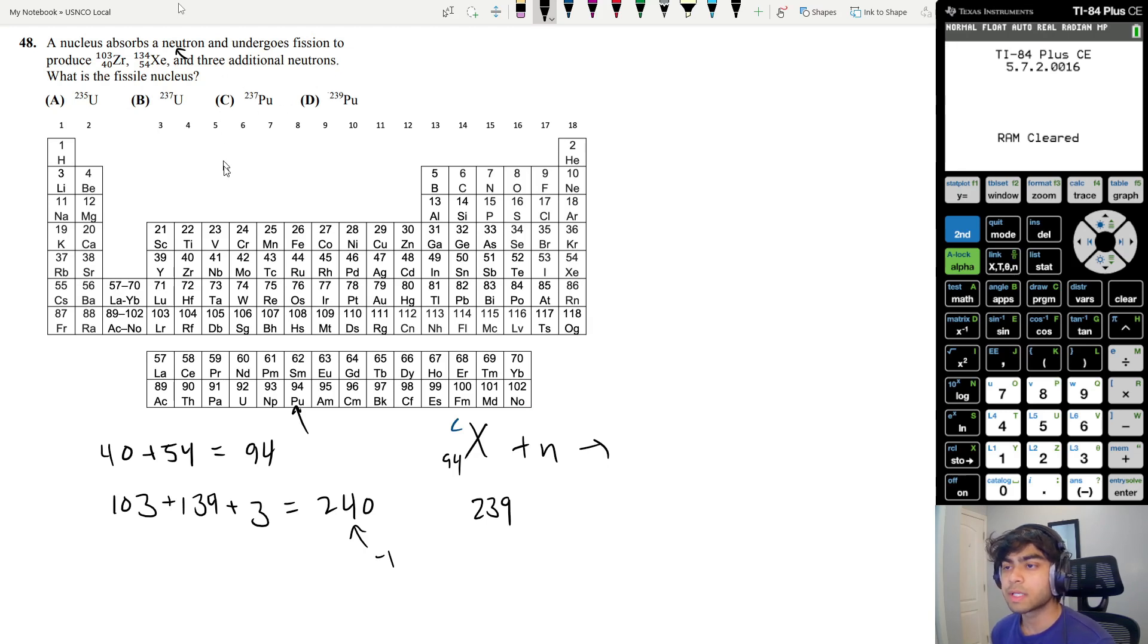The fissile nucleus is going to be plutonium since the atomic number is 94, and it's going to be plutonium 239. So the answer is answer choice D. And that was it for the atomic structure/periodicity section of the USNCO 2024 local exam. I hope this was helpful. I hope you're able to learn something and I'll see you next time. Thank you for watching.